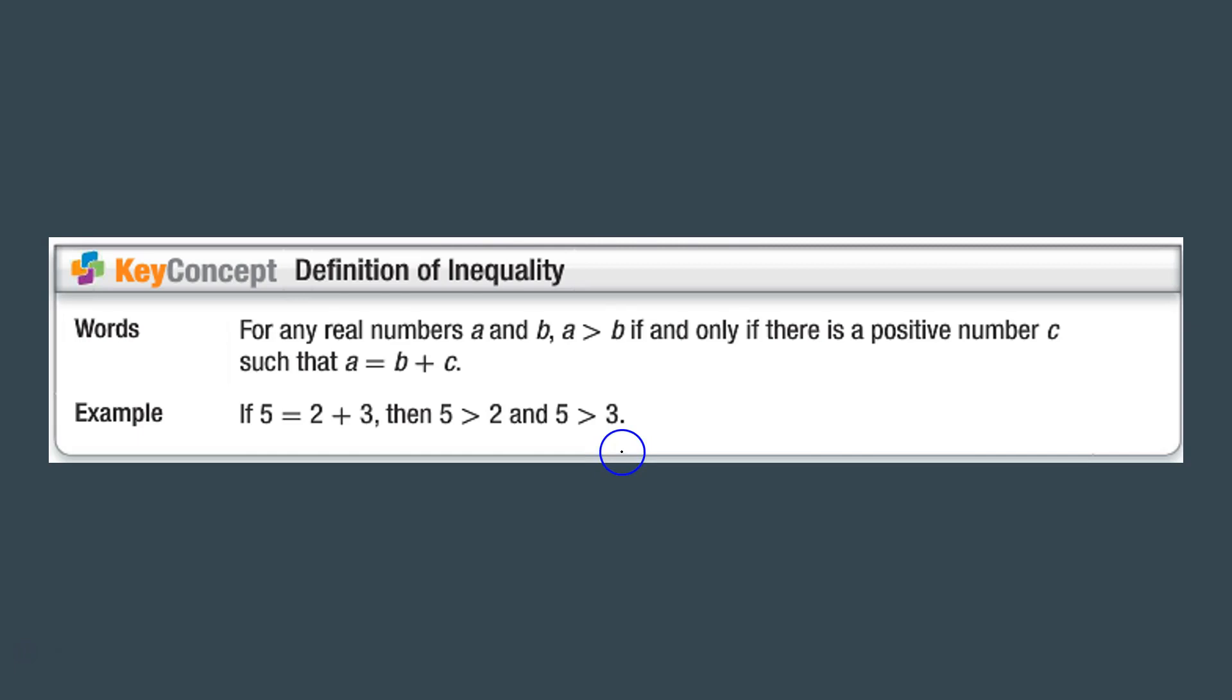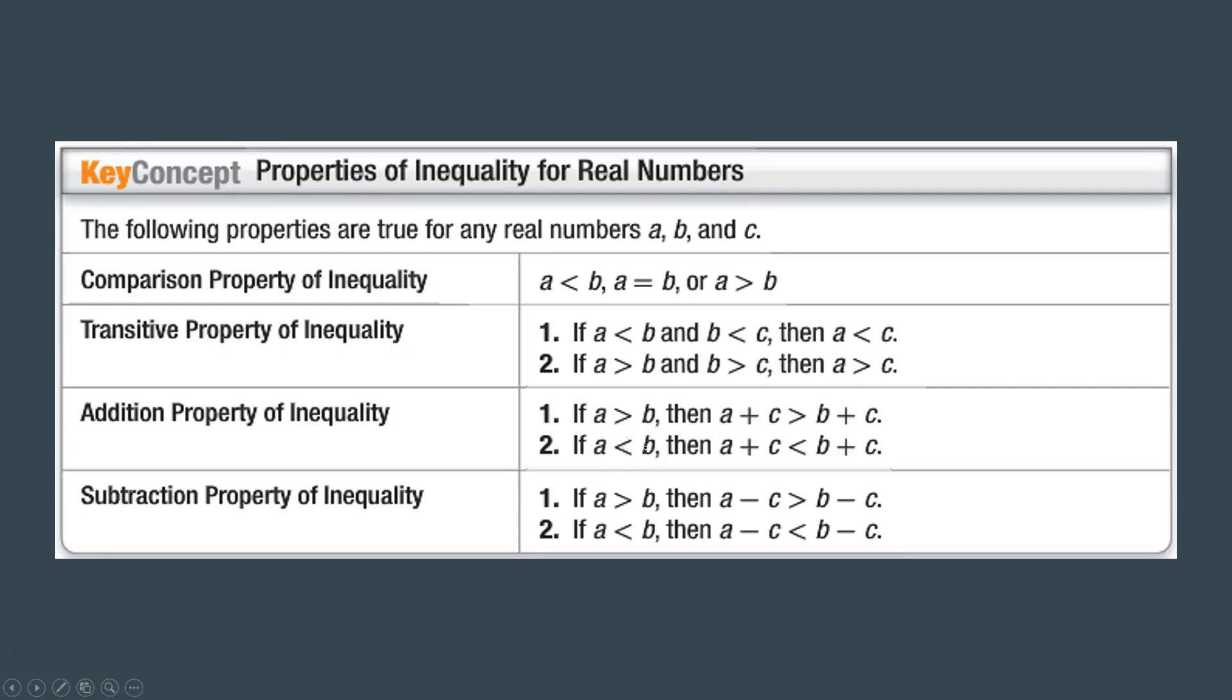So then we have the properties of inequality for real numbers. Comparison property of inequality is: a is less than b, a is equal to b, or a is greater than b. Transitive property is the same idea we've already been doing without the inequality aspect to it - remember that middle one here disappears, so a must be less than c. The addition property of inequality is just saying if we add things to both sides they are still the same, the inequality sign has not flipped, and same thing with the subtraction.